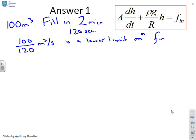And therefore, what we can do is we can say, alright, if I've got to get 100 metres cubed in in 120 seconds, then I've got 100 over 120 metres cubed per second is a lower limit on f in. And I perhaps should put the maximum value of f in. So your flow rate has to be at least 100 over 120 metres cubed per second. So that specifies the input actuator, or where the flow rate is coming from.